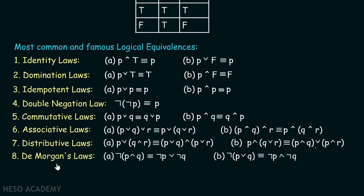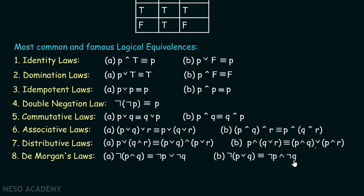The eighth one is De Morgan's laws. NOT(P AND Q) — the NOT goes inside, changes conjunction to disjunction, and negates both propositions — giving NOT P OR NOT Q. Similarly for disjunction: NOT(P OR Q) negates both propositions and changes disjunction to conjunction, giving NOT P AND NOT Q.